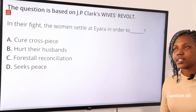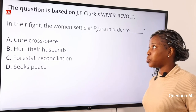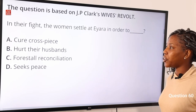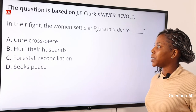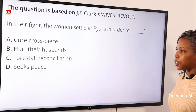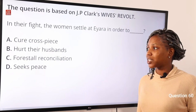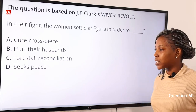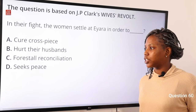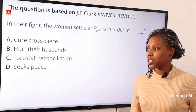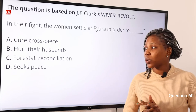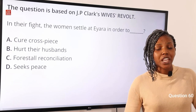Question 60, based on JP Clark's Wife's Revolt. In their fight, the women settled at Yara in order to dash. Option A: cure cross peace. Option B: hurt their husbands. Option C: foster reconciliation. Option D: seek peace. The answer to this question is option B, hurt their husbands.